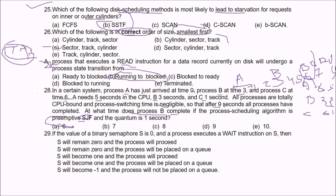Question 29: If the value of a binary semaphore S is 0 and a process executes the WAIT instruction on S, what will happen? The answer is B — S will remain 0 and the process will be placed on a queue.